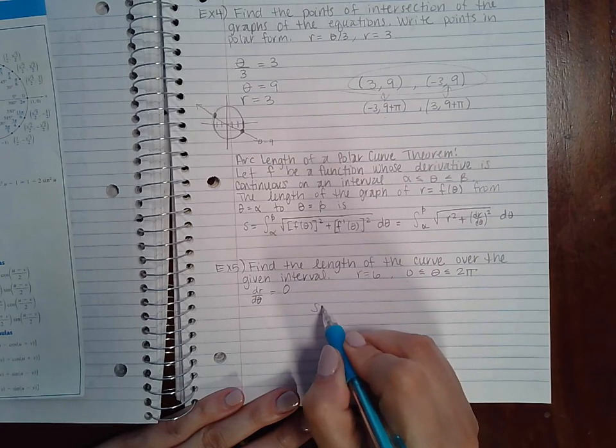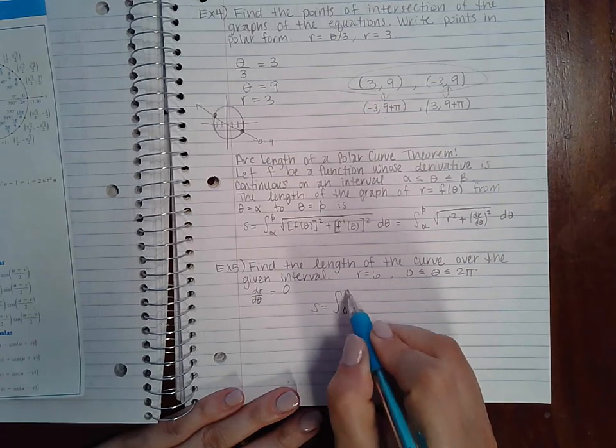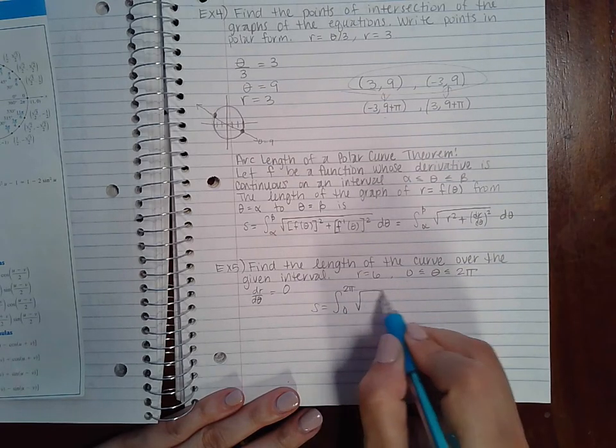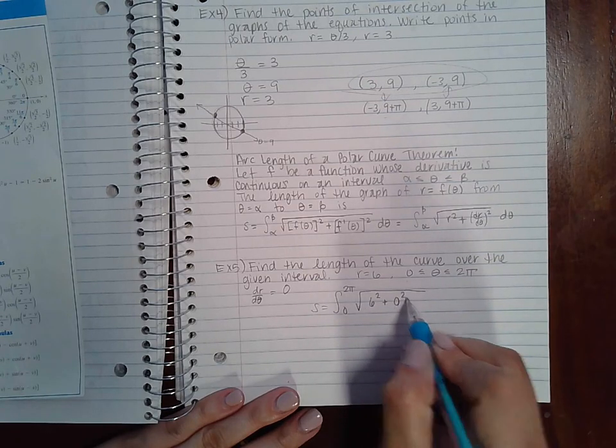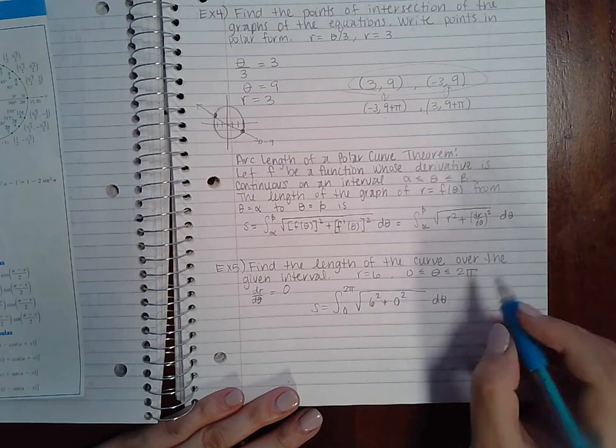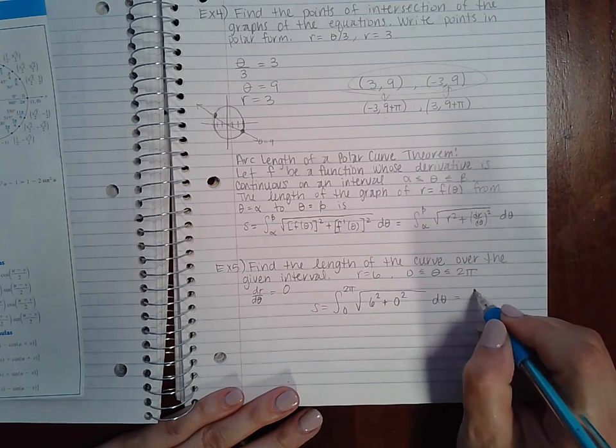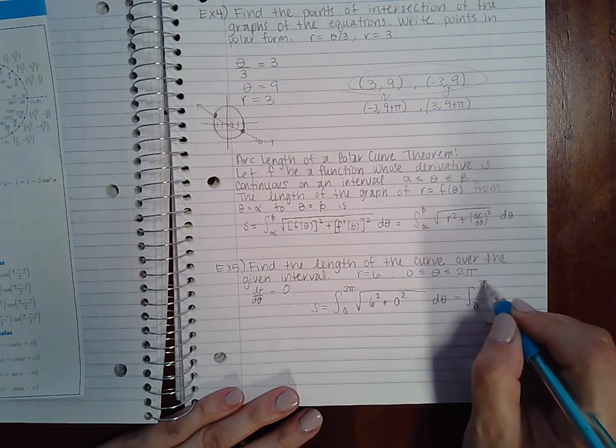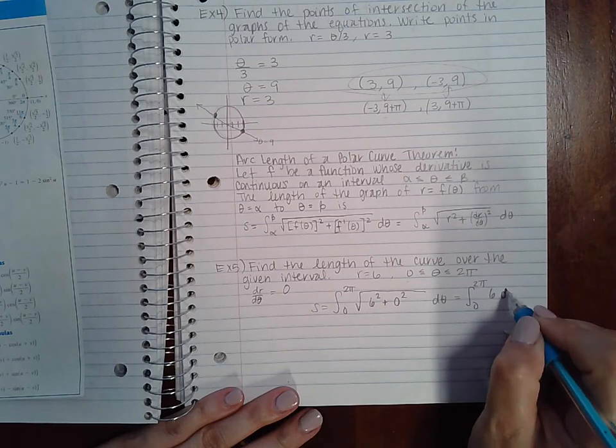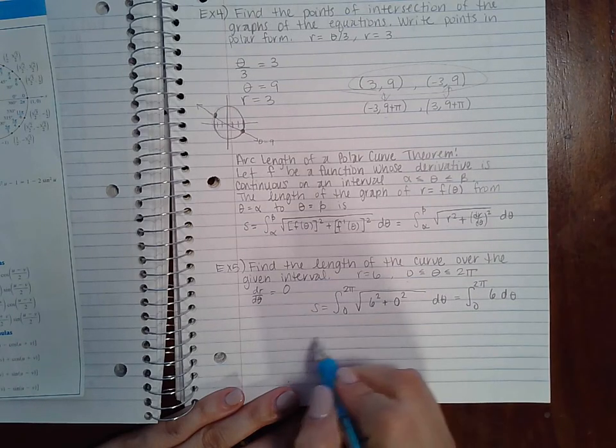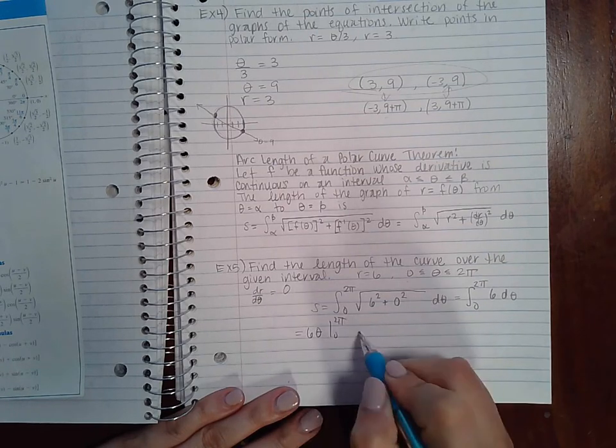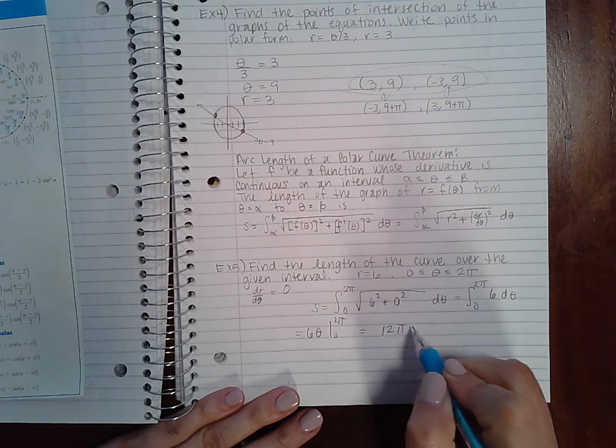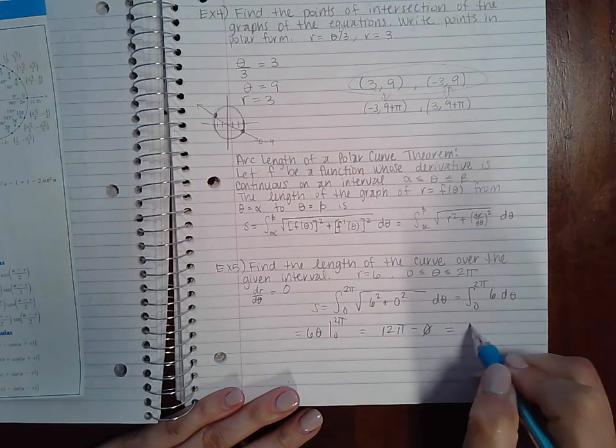So I get that S equals from zero to two pi, the square root of R squared plus dr d theta squared d theta. So I end up with from zero to pi, which means I end up with six theta from zero to two pi, which means I end up with 12 pi minus zero or just 12 pi.